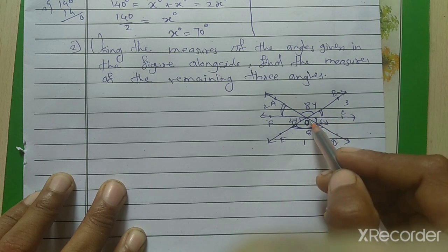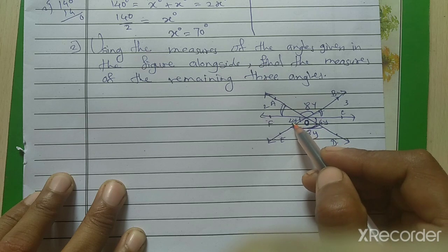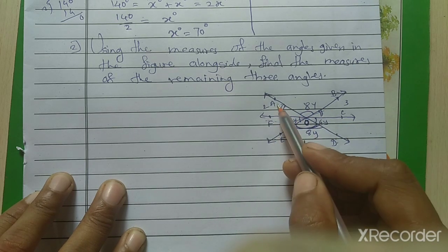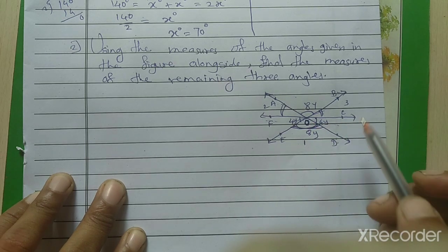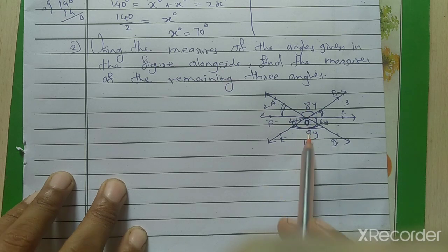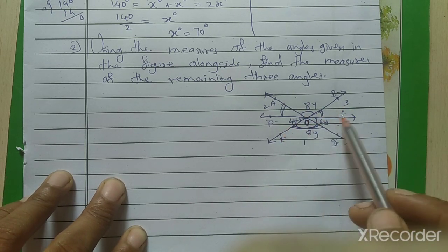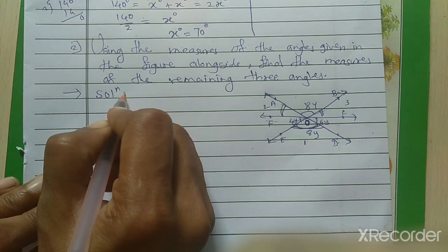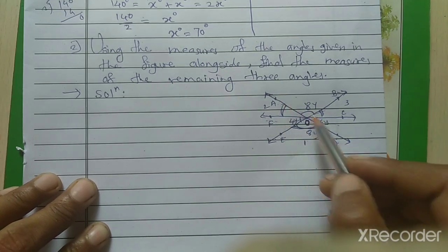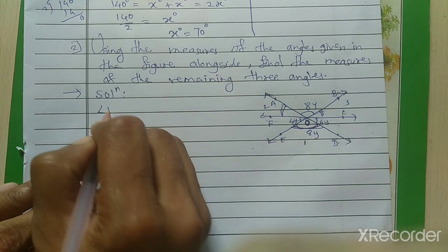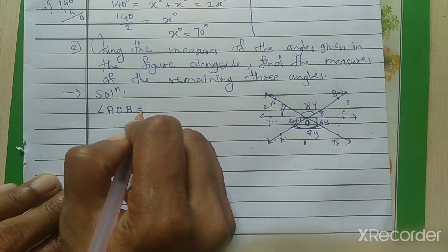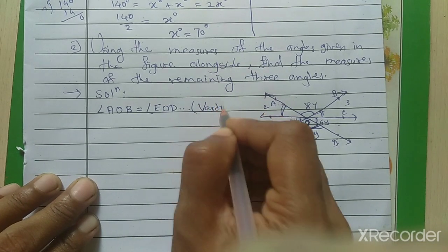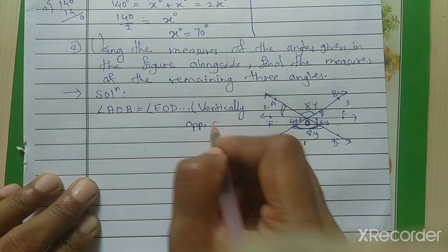Angle AOB equals angle EOD by the property of vertically opposite angles. Now, angles AOF, FOE, and EOD together form a straight line AD, making it a linear pair. So angle AOF plus angle FOE plus angle EOD equals 180 degrees.